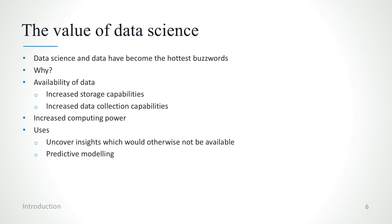Data science and data have become the hottest buzzwords. Why is that? First of all, the availability of data has increased rapidly in the last couple of decades. Not only do we now have increased storage capabilities, but also it's easier to collect data. For example, in sports, we have wearable GPS units that can record not only the position of the players on the pitch, but also things such as acceleration and deceleration. Things like that were not available in the past. Also, we now have increased computing power, so it's possible to run more advanced statistical and machine learning algorithms which we couldn't do in the past.